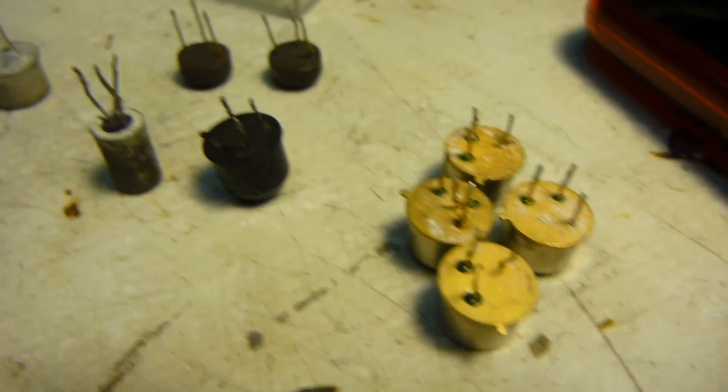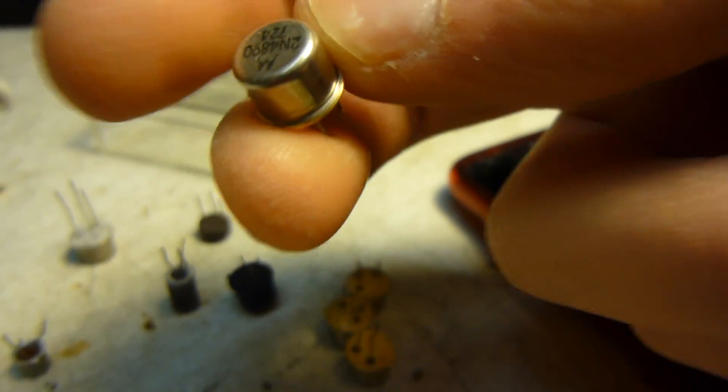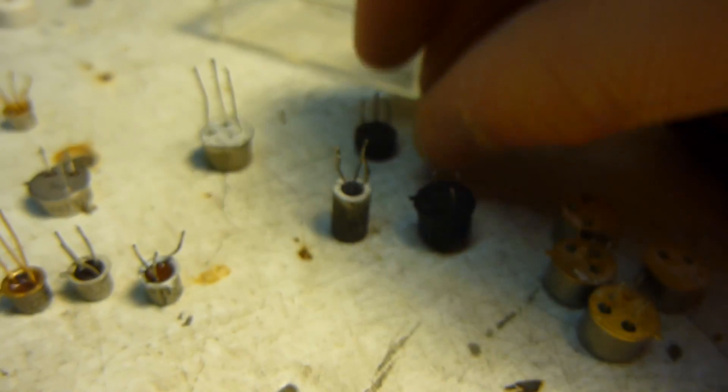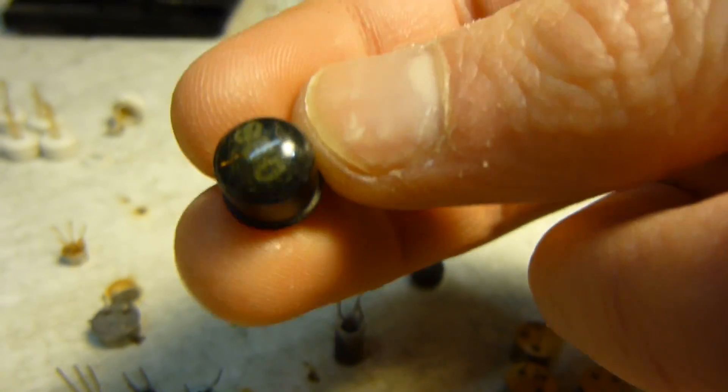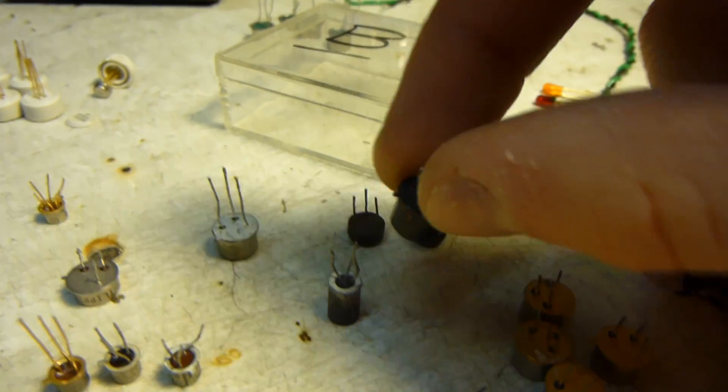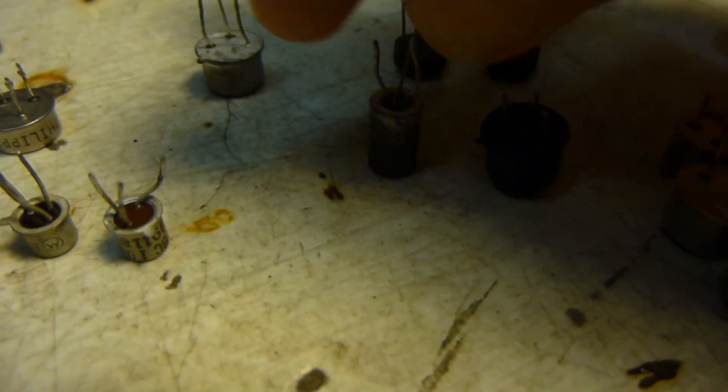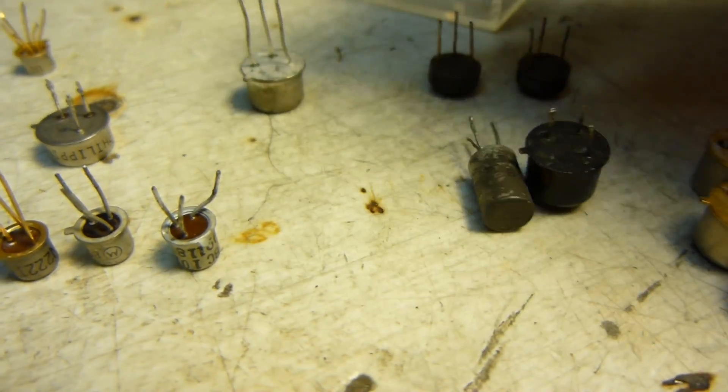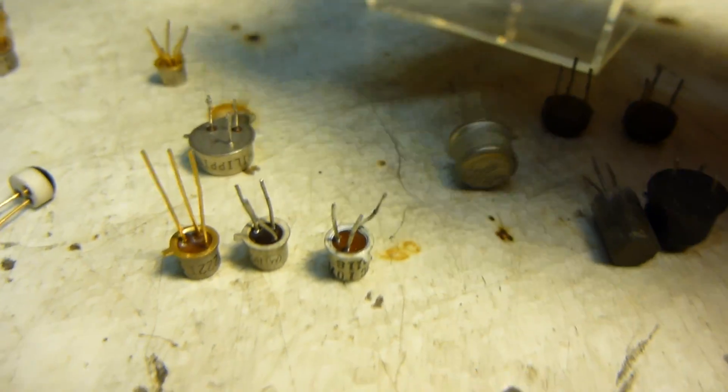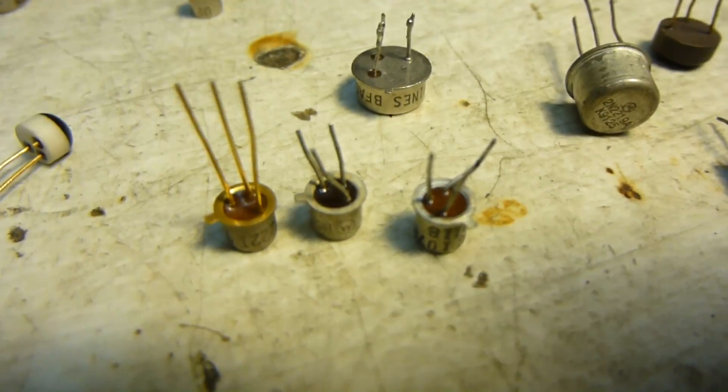And then over here we've got some transistors. These are different, these are actually large metal can ones and then we've got some I think this is also metal. Yeah, that's a metal can, it's just painted black. Here's another old metal can. Lots of different metal can ones, some little tiny metal cans.